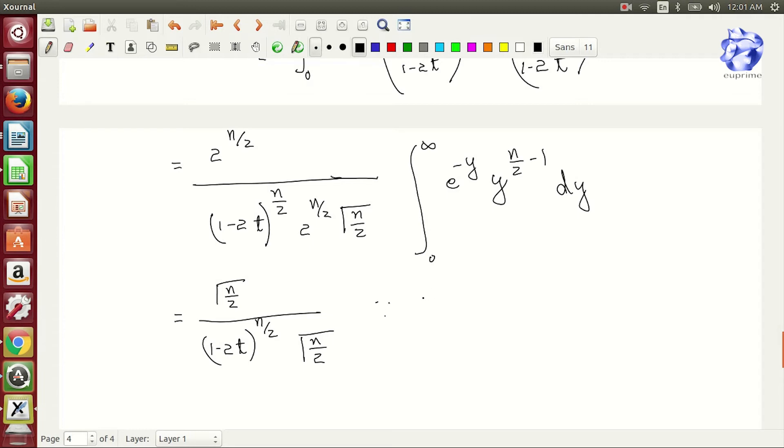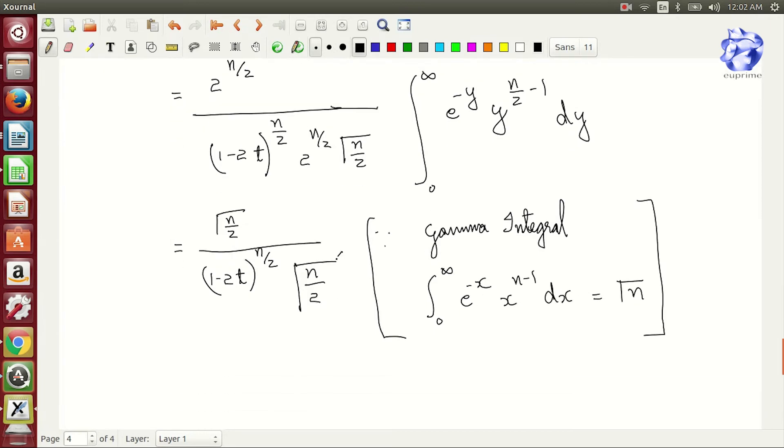This step we get because of gamma integral 0 to infinity e to the power minus x x n by n minus 1 dx which is equal to root of n and hence we get this equation. On canceling n we are left with this much.